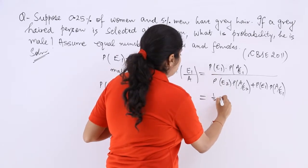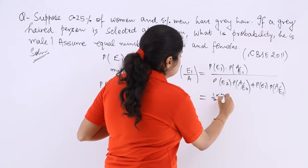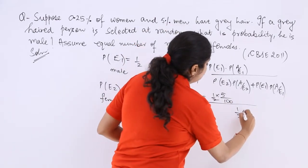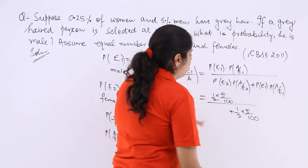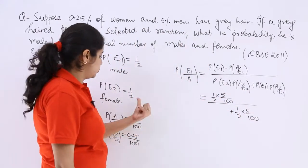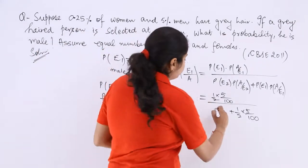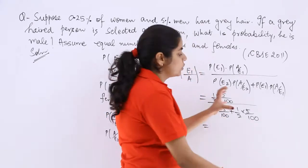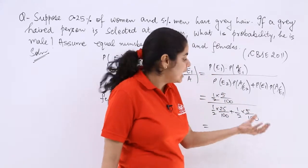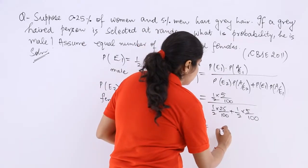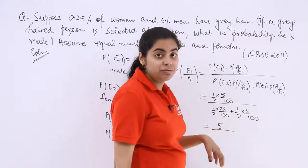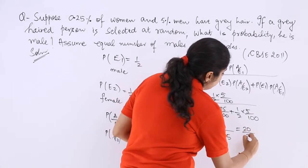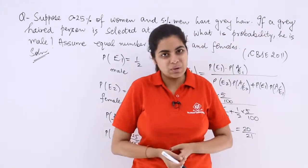So this will be 1 by 2 multiplied by 5 by 100 whole divided by again 1 by 2 multiplied by 5 by 100 plus 1 by 2 multiplied by 0.25 over 100. So if you just remove the decimal and cancel the LCM you would be getting 5 here and 5.25 here, and when you solve this further you will be getting 20 over 21 and that is the answer to this question.